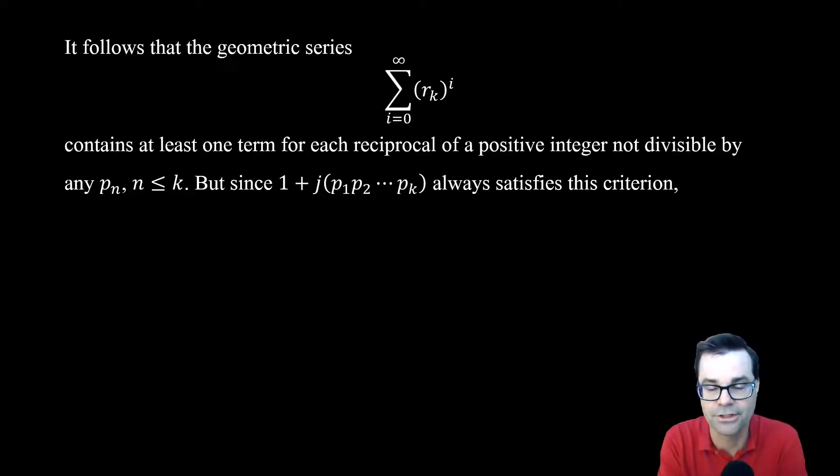as long as that positive integer is not divisible by any of the first k prime numbers. From the illustration that we were looking at earlier, it just means it can't be divisible by 2, 3, 5, or 7.